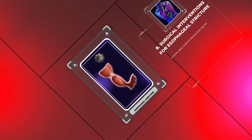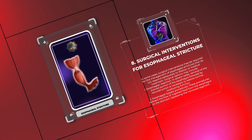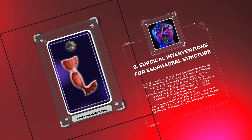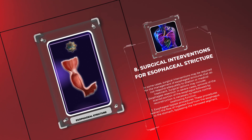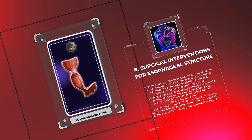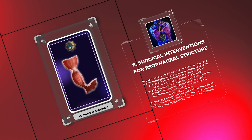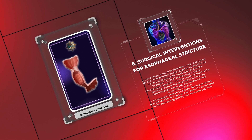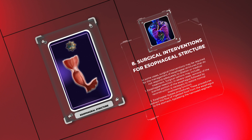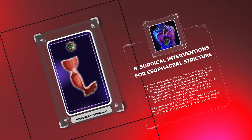In some cases, surgical interventions may be required for the management of esophageal strictures that do not respond adequately to dilation or medical treatment. Surgical options may include: 1. Esophageal resection — in severe cases, removal of the scarred portion of the esophagus followed by reconstruction is necessary to restore normal swallowing function. 2. Esophageal bypass procedures — these procedures redirect the flow of ingested food from the esophagus to the stomach, bypassing the narrowed segment.